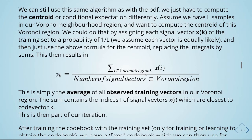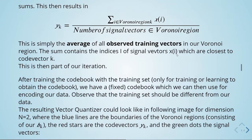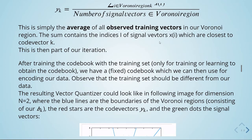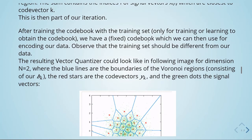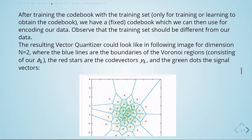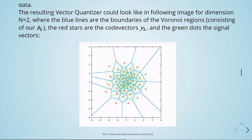This is part of our iteration. After training the codebook with the training set — used only for training or learning the codebook — we have a fixed codebook, which we can then use for encoding our data. Observe that the training set should be different from our data. The resulting vector quantizer could look like this image for dimension equal to 2, where the blue lines are the boundaries of the Voronoi regions (b of k), the red stars are the code vectors y of k, and the green dots are the signal vectors.